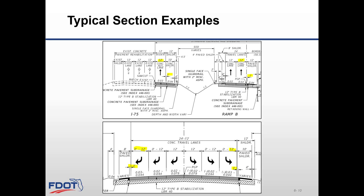Here are two examples of typical sections using concrete shoulders and asphalt shoulders. The top typical shows a concrete mainline with tapered concrete shoulders. As you can see, the outside lane slab width is 13 feet and it is striped at 12 feet to avoid edge stresses. The bottom shows a concrete mainline with an asphalt shoulder, and also has an outside mainline slab at 13 feet striped at 12 feet.